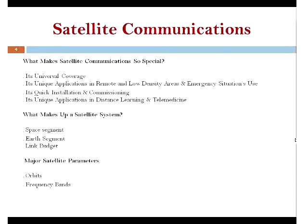What makes satellite communication so unique and special? It's universal coverage. We can cover the whole Earth — if you are in a geostationary orbit — with only three satellites. By having just three satellites, we can cover the entire Earth except the North and South Poles.